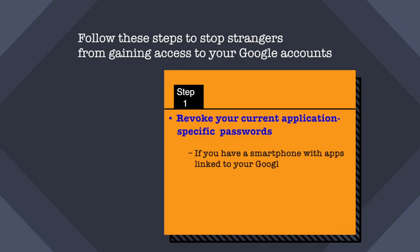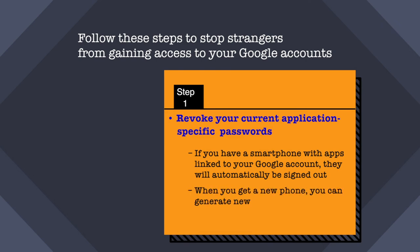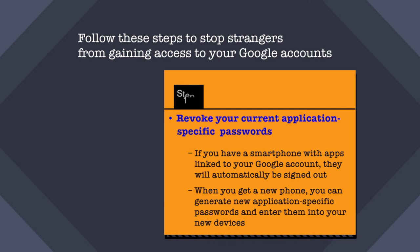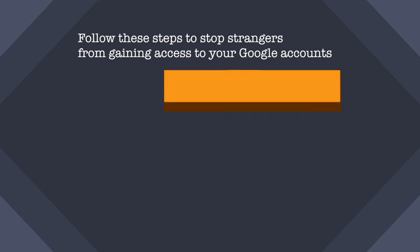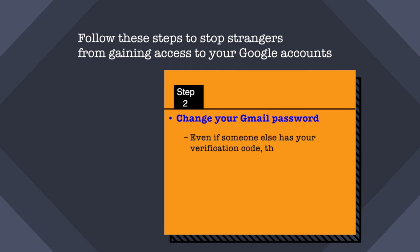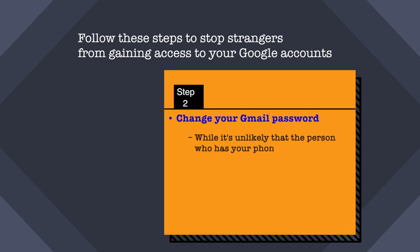When you get a new phone, you can generate new application-specific passwords and enter them on the new device. Step two: change your Gmail password. Even if someone else has your verification code, they can't access your Gmail account without your new password. While it's unlikely the person who has your phone has also cracked your Gmail password, you can never be too sure — so change your Google password first. If you are logged into your Google account in any web browser, you will automatically be signed out.